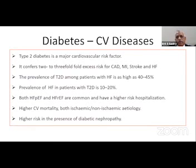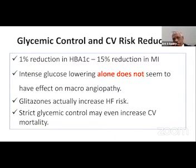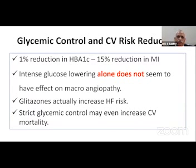Diabetes confers increased risk for coronary disease, MI, and heart failure. Nearly 40 to 45 percent of diabetic patients develop heart failure over time, and conversely nearly 20 percent of heart failure patients have diabetes, increasing risk of hospitalization and mortality — whether ischemic or non-ischemic. Morbidity and mortality increase further if the patient develops diabetic nephropathy. Diabetes control is important, primarily for preventing microvascular complications, but it also reduces macrovascular complications. However, it's not just hyperglycemia we must treat — associated lipid disorders and hypertension must also be addressed.